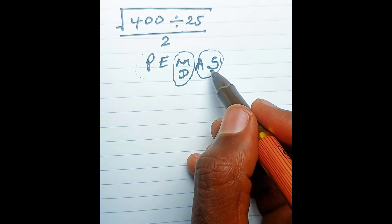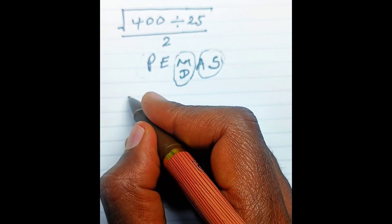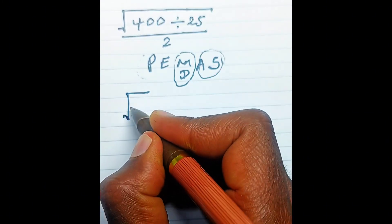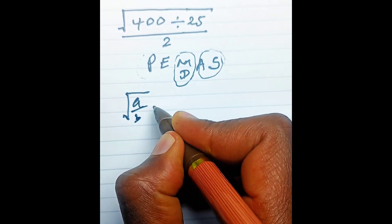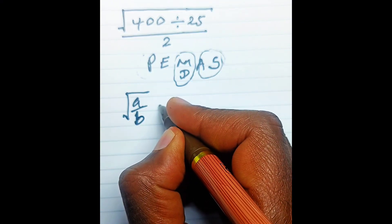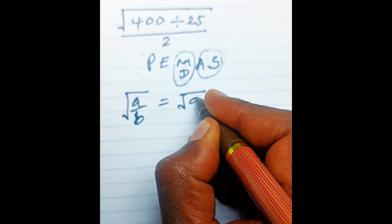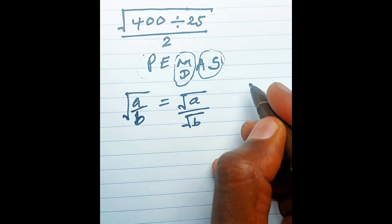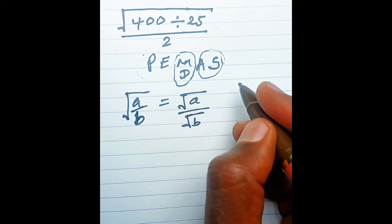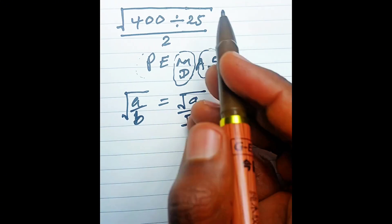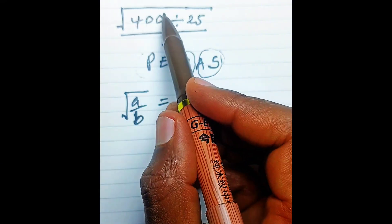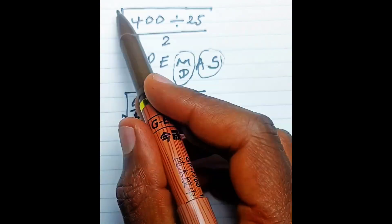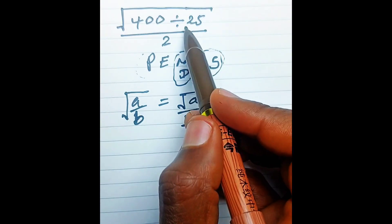We also have the rule: the square root of a over b equals the square root of a over the square root of b. We need to calculate the value inside the square root first — the parentheses — so we simplify the expression inside the square root.